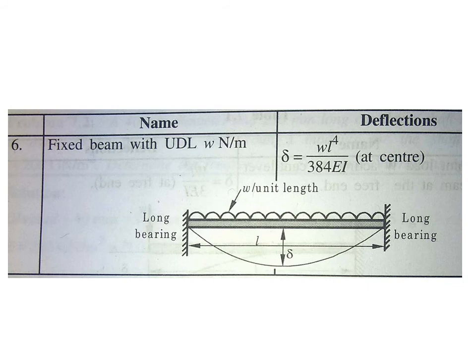For a fixed beam with a uniformly distributed load, there are two cases — point load and UDL — giving a total of six cases across three beam types. For a fixed beam with UDL, the deflection equation is: delta equals WL⁴ divided by 384EI.